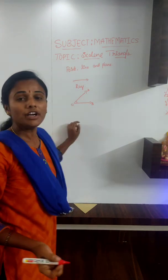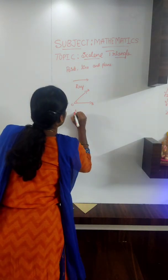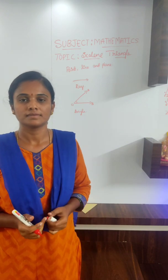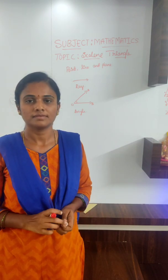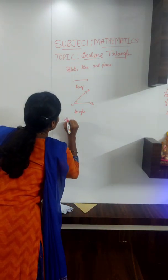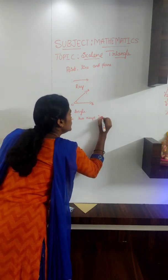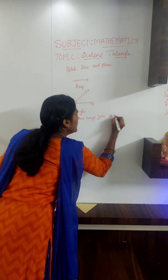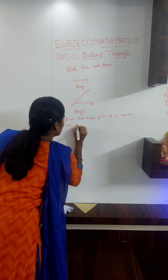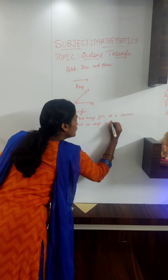Then, what do you call this? Angle. Very good. Angle. What is an angle? When two rays join at the common end point, an angle is formed. Very good. When two rays join at the common end point, an angle is formed.